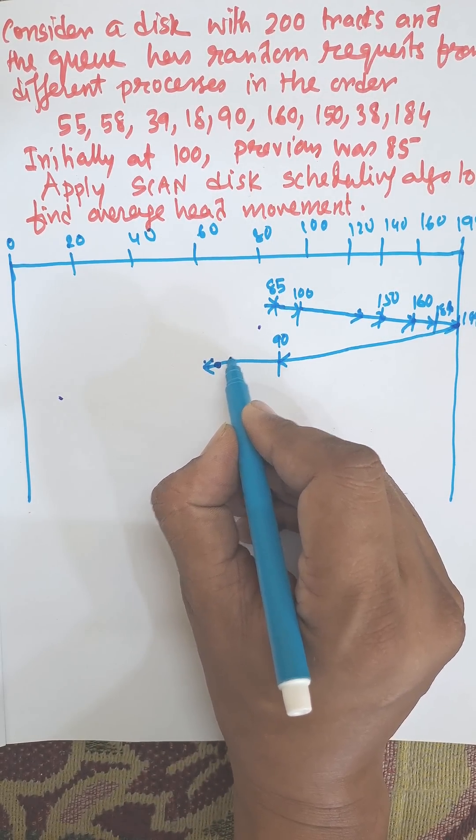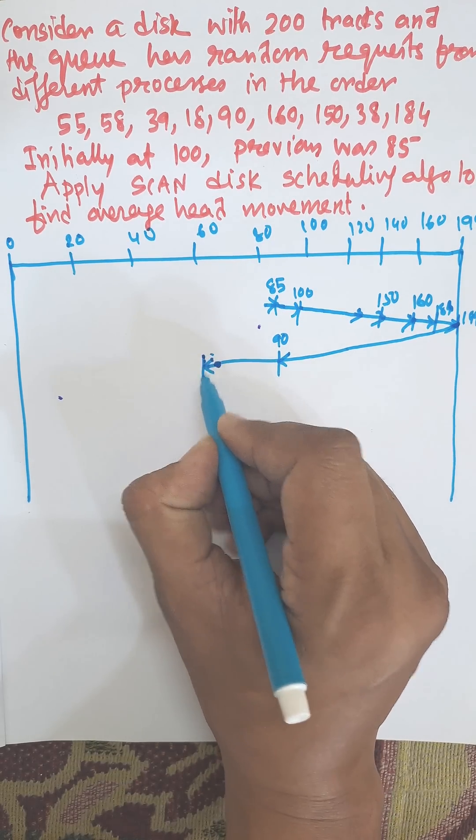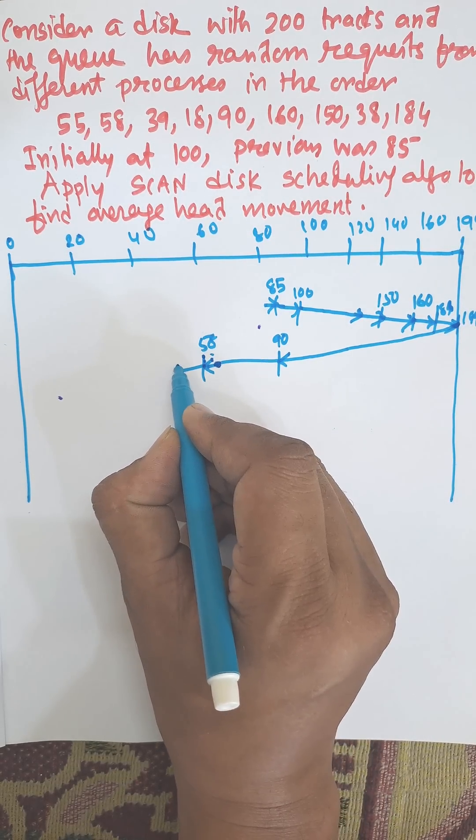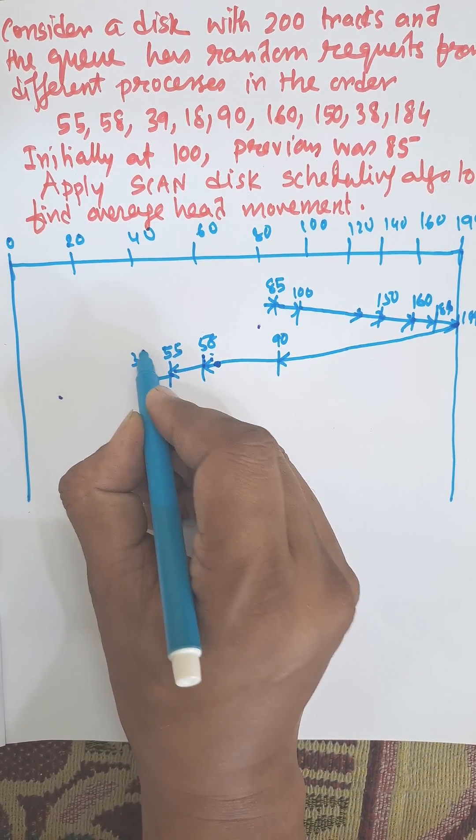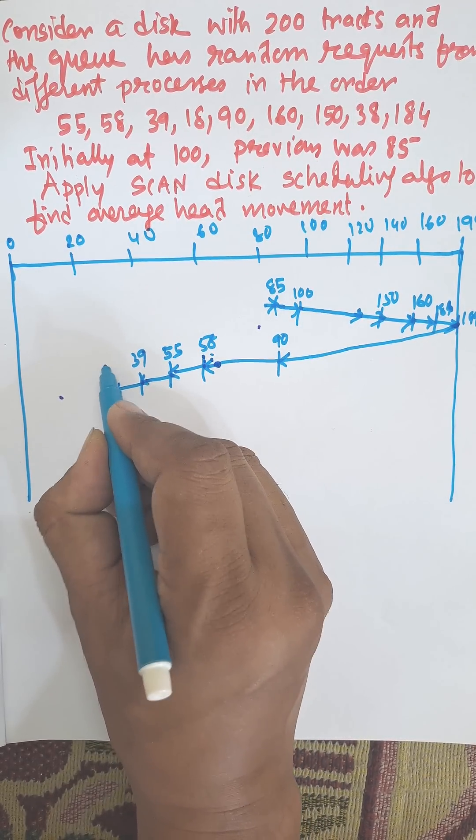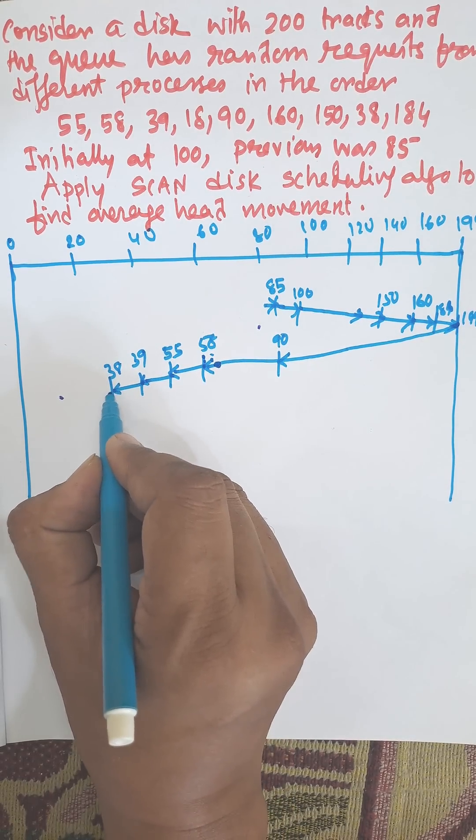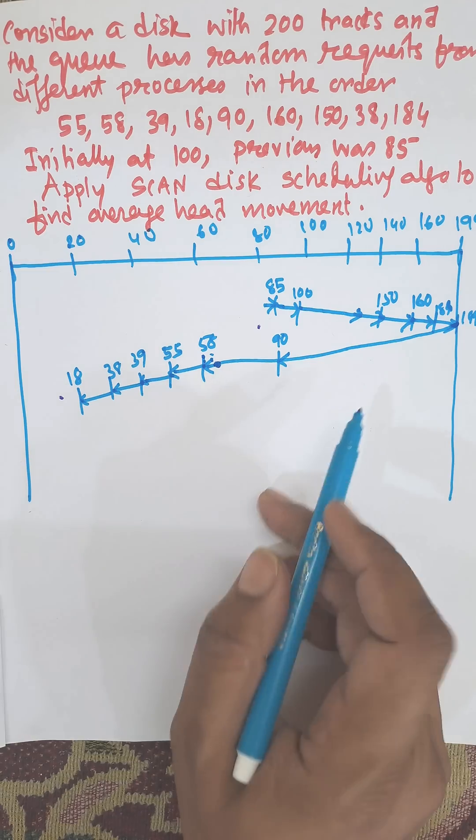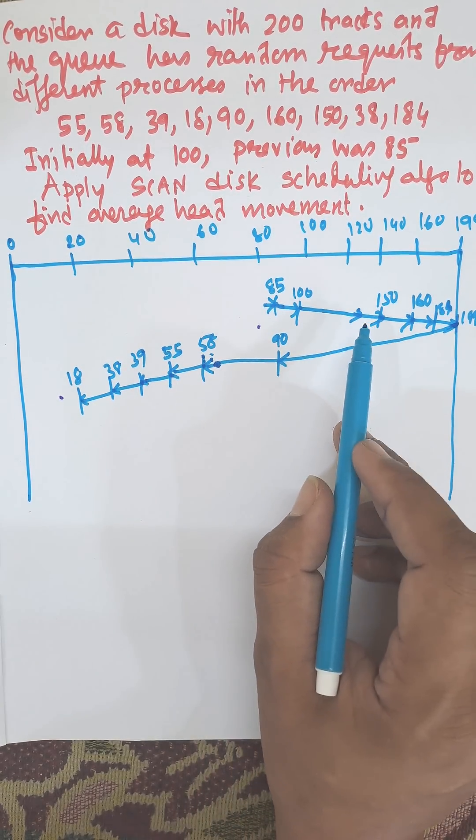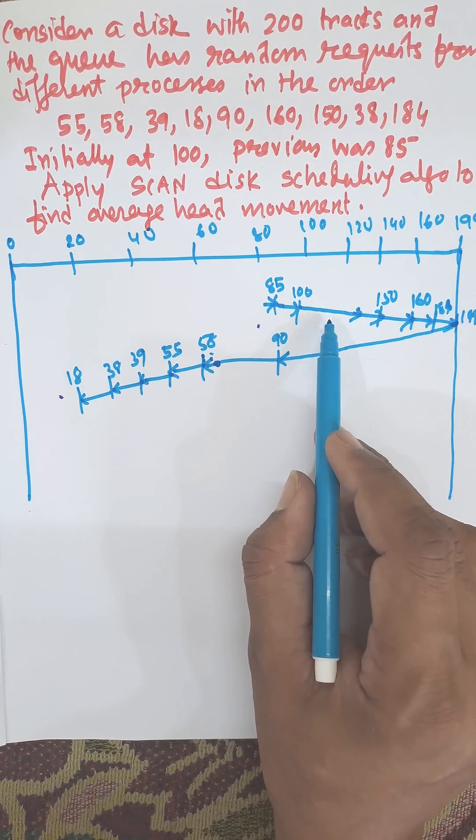Then 58, then 55, and then 39, and then 38, and finally 18. This is the elevator algorithm - it will move from one direction to another direction, visiting each track one by one.